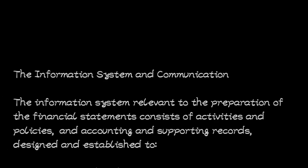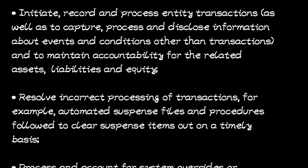Another component of the internal control system is the information system and communication. The information system relevant to the preparation of financial statements consists of activities, policies, accounting and supporting records designed to initiate, record and process the entity's transactions, as well as capture, process and disclose information about events and conditions other than transactions, and also maintain accountability for related assets, liabilities and equity.